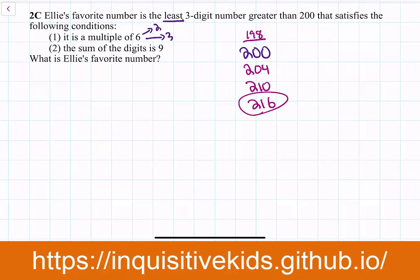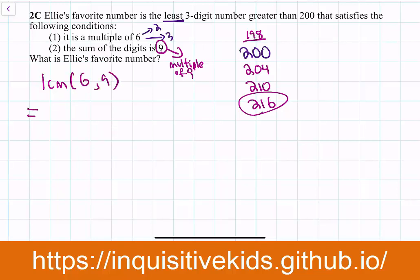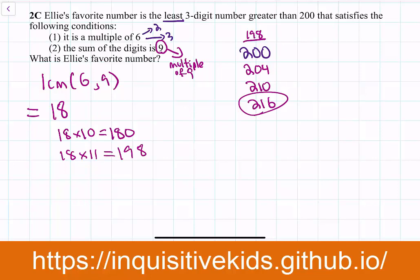Another way to do this problem: if the sum of the digits is 9, then this number is actually also a multiple of 9. So if this number is a multiple of 6 and a multiple of 9, what is the least common multiple — the LCM — of 6 and 9? The LCM of 6 and 9 is 18. But 18 is not greater than 200, so we have to find a multiple of 18 greater than 200. 18 times 10 gives 180, 18 times 11 gives 198 — not to 200 yet. But 18 times 12 gives 216, so this number must be Ellie's favorite number.